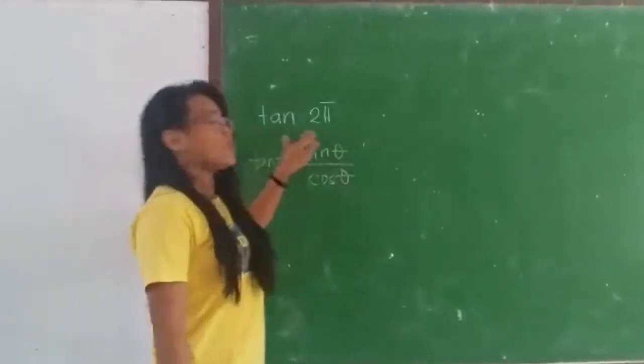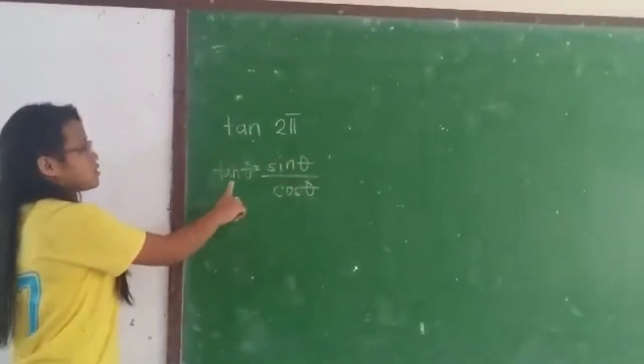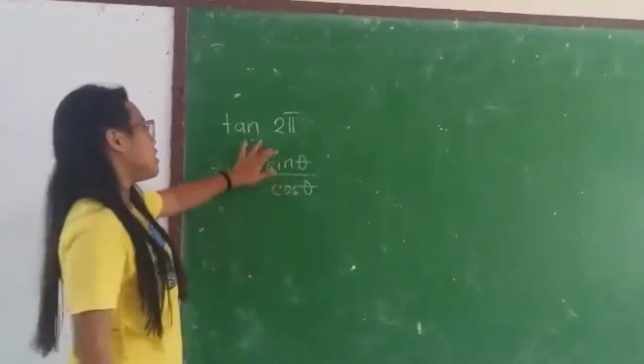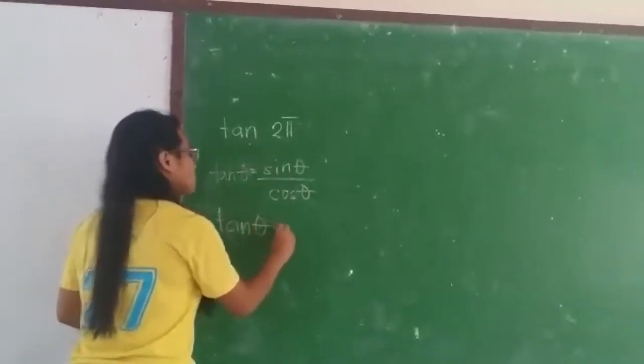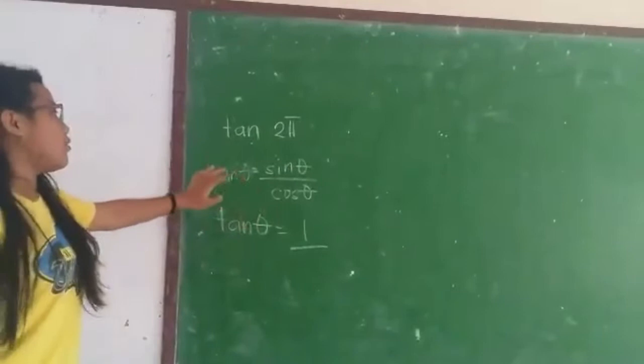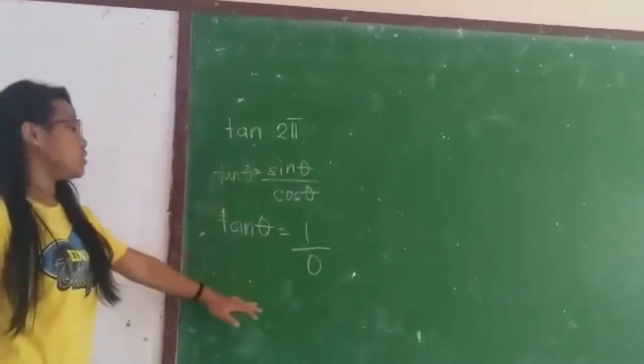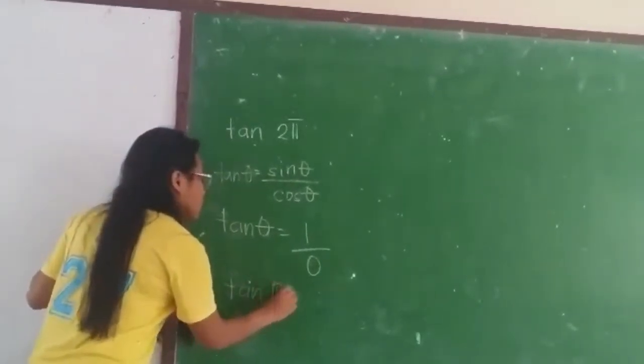Now let's find the tangent of π over 2. The formula for tan θ is equal to sin θ over cos θ. So the sin of π over 2 is equal to 1, and the cos of π over 2 is 0. So 1 over 0, the tangent theta is undefined.